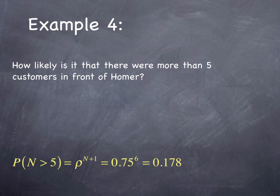Even though you are under-saturated, there's still a high likelihood, a non-zero likelihood that he's waiting behind somebody, and 17.8% of the time, he's waiting behind five people.